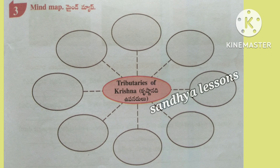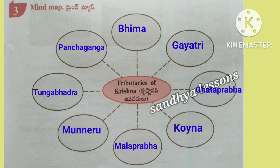Third, mind map. The mind map is about tributaries of Krishna. Tributaries of Krishna are: Bhima, Gayatri, Gataprabha, Koina, Malaprabha, Munneru, Tungabhadra, and Panchaganga.